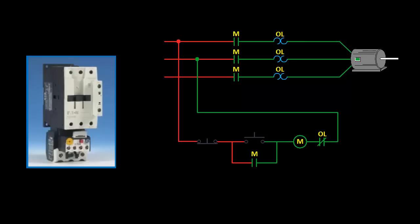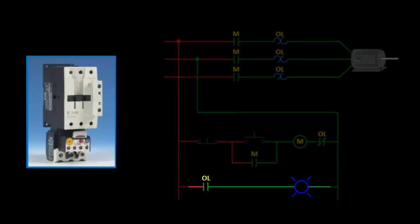The relay's normally open contact is optional. It closes on a trip and can be used to turn on a pilot light or sound an alarm whenever it's tripped.